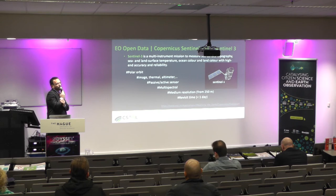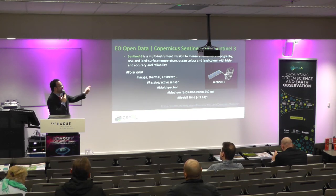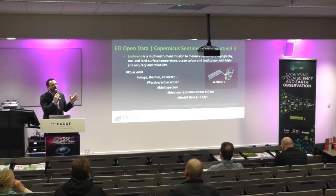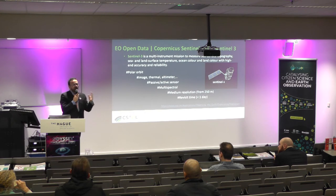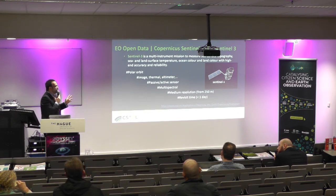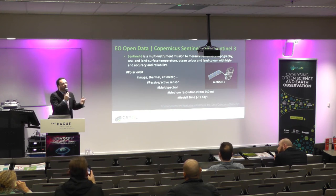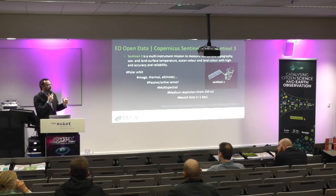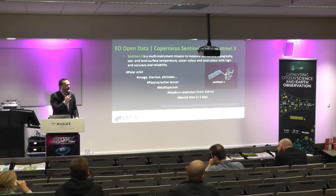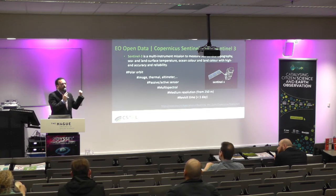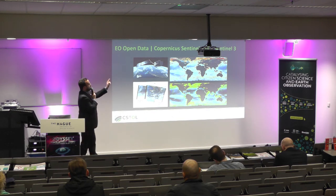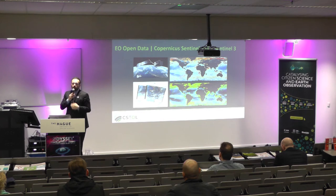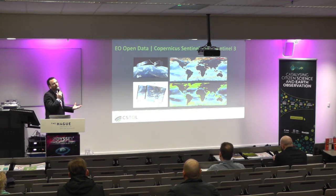Sentinel-3 is similar to Sentinel-2, but with a larger pixel size. You can get an image every day, but with less detail. It also has different sensors like an altimeter. The main idea is that you get images every day globally. Most importantly, for temperature you need to use this satellite — it has a thermal sensor. You can get an image of the whole world every day, so if you can process it, you can have a global view of what's going on.